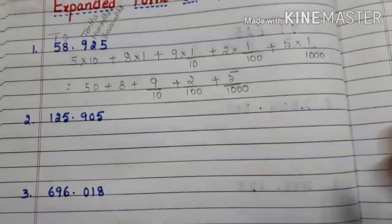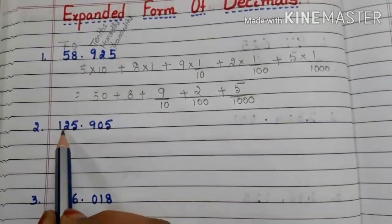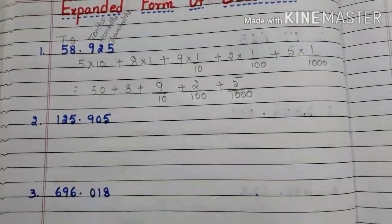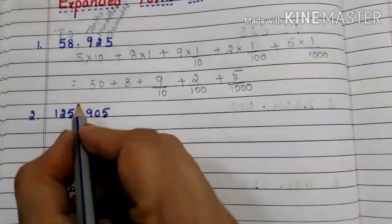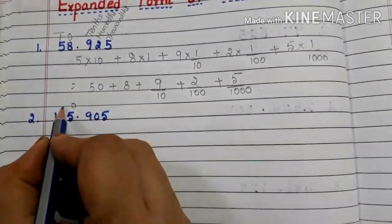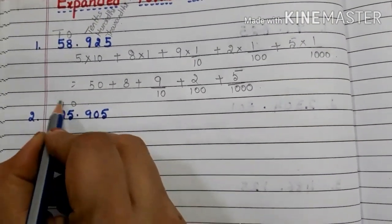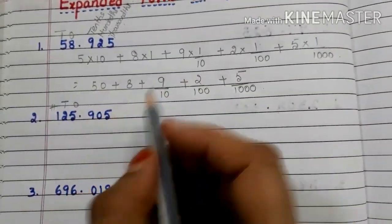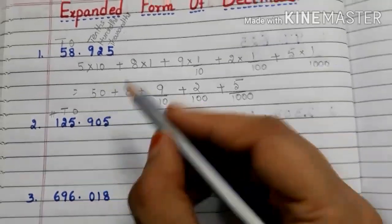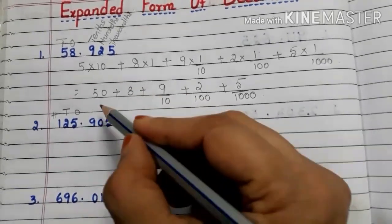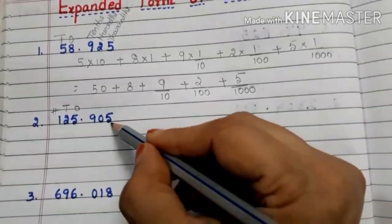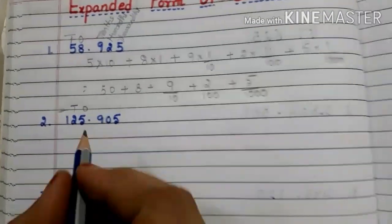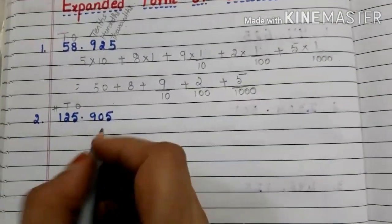Let us go to another example. Here we have the decimal number 125.905. Let us see the places first. 5 is in the 1's place, 2 is in the 10's place, 1 is in the 100's place. Coming to the decimal part, 9 is in the 10ths place, 0 is in the 100ths place, 5 is in the 1000ths place.